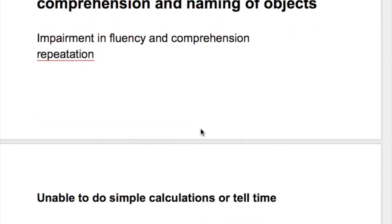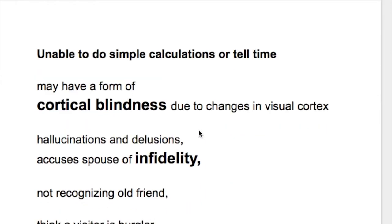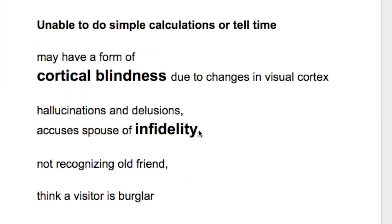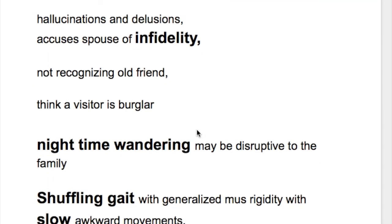They're unable to do simple calculations or tell time. They may have a form of cortical blindness due to changes in visual cortex. Hallucinations and delusions occur - they may accuse their spouse of infidelity, not recognize old friends, or think a visitor is a burglar.